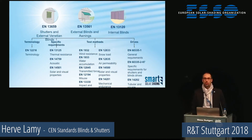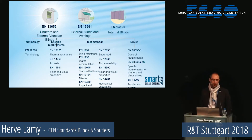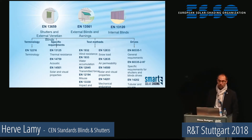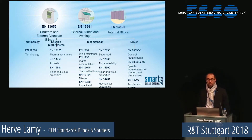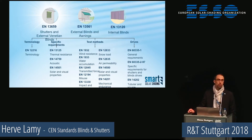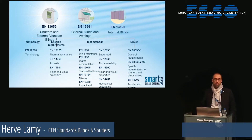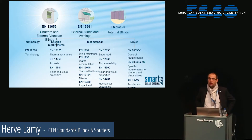A very short overview of the CEN standards which apply to blinds and shutters in Europe. Basically there are three product standards: EN 13659 applying to shutters and external venetian blinds, EN 13561 which applies to external blinds and awnings, and EN 13120 which applies to internal blinds. These three product standards are directly connected to European directives — either the construction product regulation or the machinery directive.